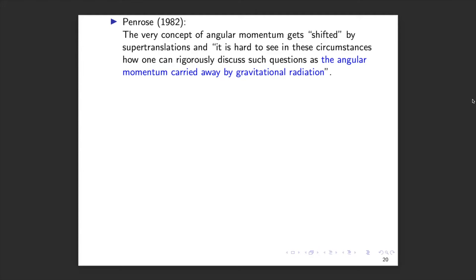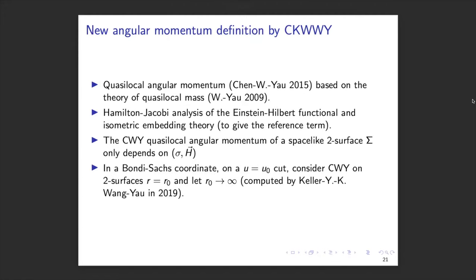The way to resolve this ambiguity is to come up with a new definition of angular momentum — the CWY angular momentum. This is joint work with Pauline Chen, Yi-Kai Wang, and Professor Yao. It originated from work we did back in 2009, where we developed a general theory of quasi-local mass. Then in 2015, with Pauline Chen, we developed a theory of quasi-local angular momentum.